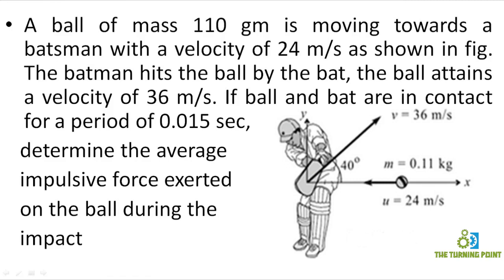A ball of mass 110 grams is moving towards a batsman with a velocity of 24 meters per second. The batsman hits the ball with the bat and the ball attains a velocity of 36 meters per second. If the ball and bat are in contact for a period of 0.015 seconds, determine the average impulsive force exerted on the ball during the impact.